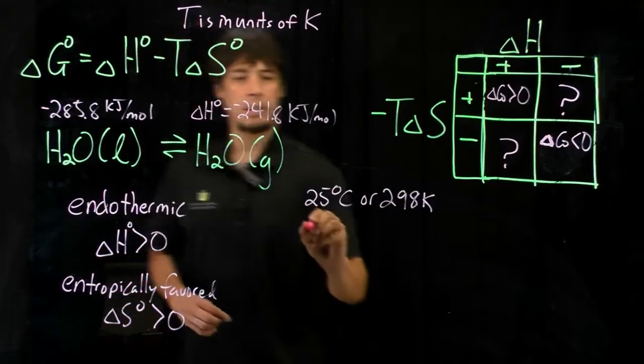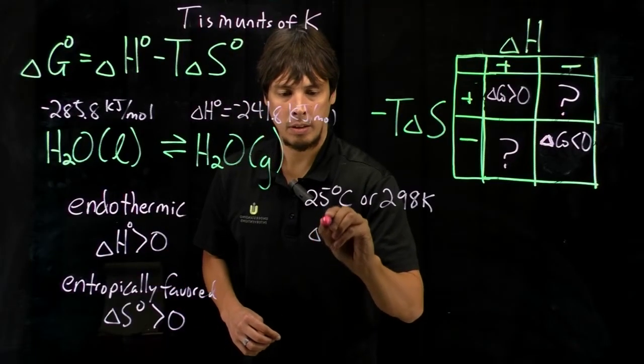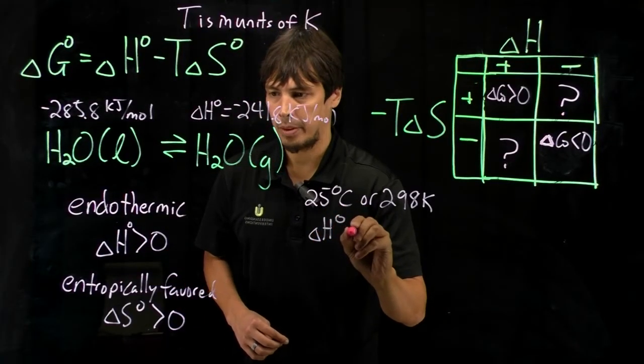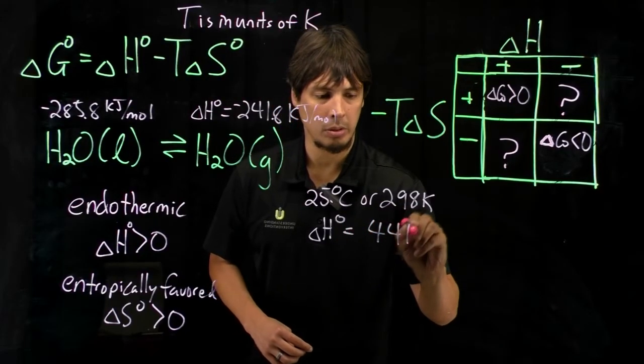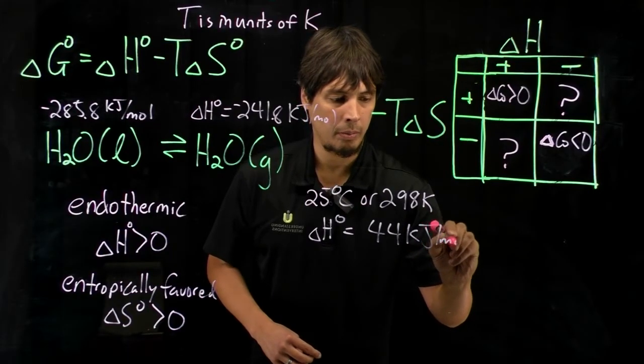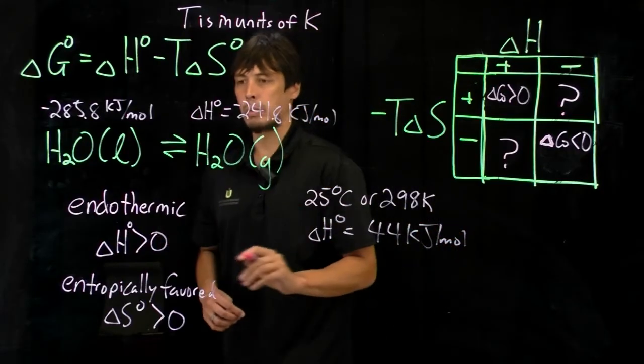And that is an overall delta H term of 44 kilojoules per mole, positive, as we predicted.